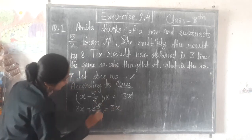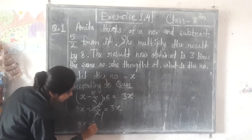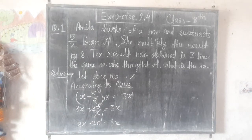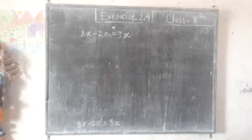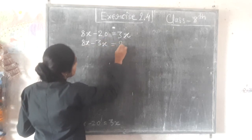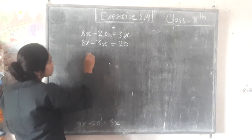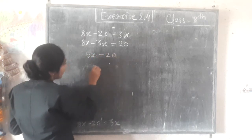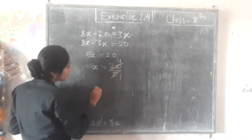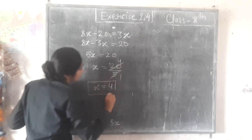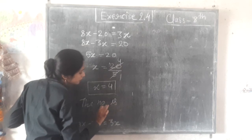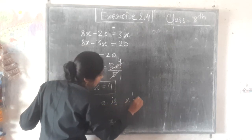Now, 8x minus 20 is equal to 3x. Transferring 3x to the left side: 8x minus 3x minus 20 equals 0, so 8x minus 3x is equal to 20.